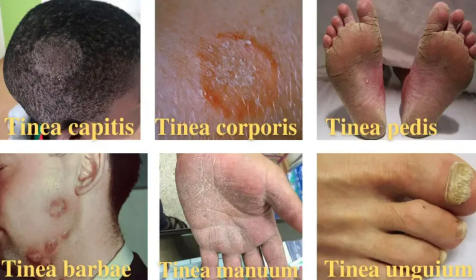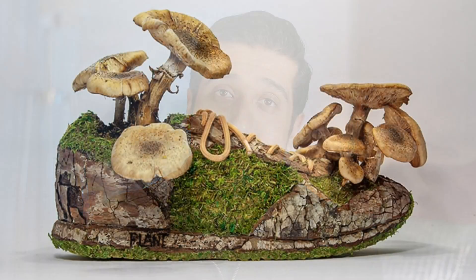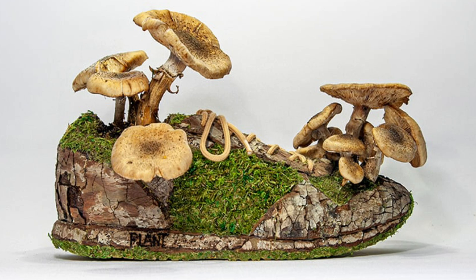Let's start off with what it is. Fungi thrive in warm and moist environments, which lets them naturally overpopulate. The same fungi that causes jock itch, athlete's foot, and ringworm can also cause nail infections, and they are far more common on the toenails than your fingernails because your toes are in shoes where it can get warm and moist.